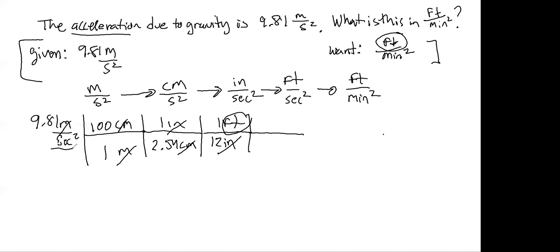So I need to get rid of seconds squared. So that unit of seconds has to go on top. And on the bottom, I'm going to have minutes. And I know in one minute, there's 60 seconds. However, this is squared.